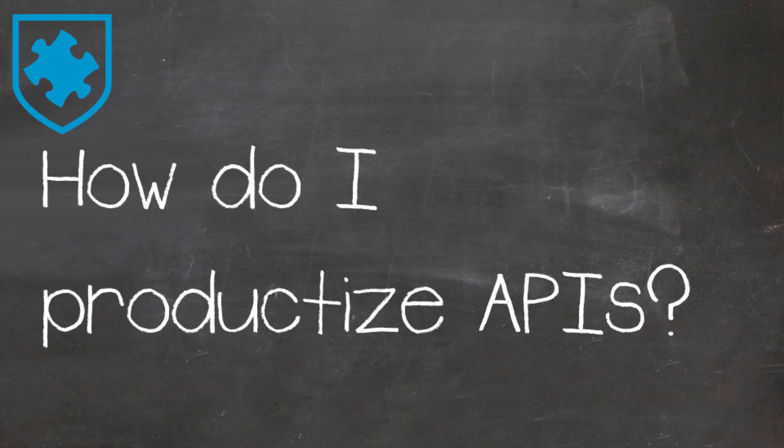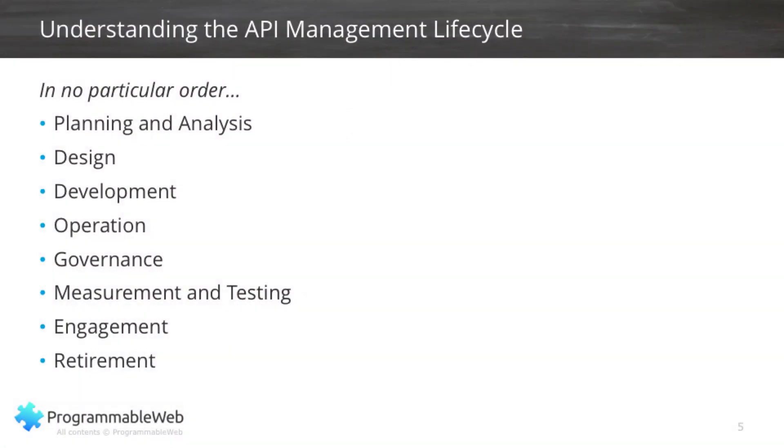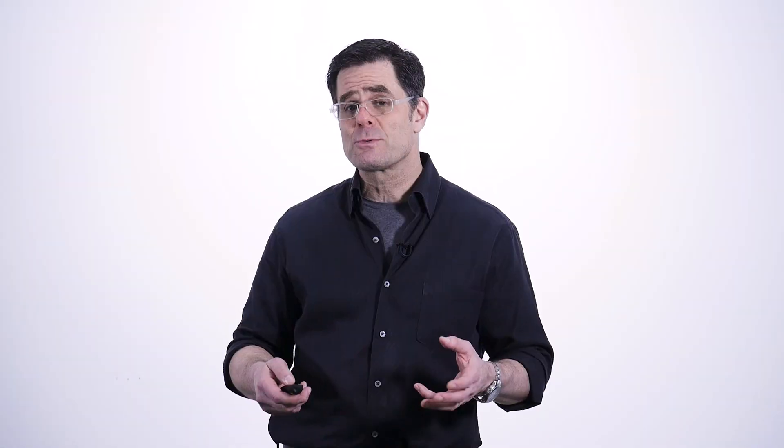This is very important because we're going to talk about what we call the API lifecycle. Everybody's got a little bit different view on this, but we see eight different phases of the API management lifecycle. One thing to keep in mind is the API management lifecycle is not unlike a software management lifecycle. This is one of the reasons we have to constantly treat an API as a product — there's a whole lifecycle to it, and it deserves first-class citizenship just like any other product in your company.